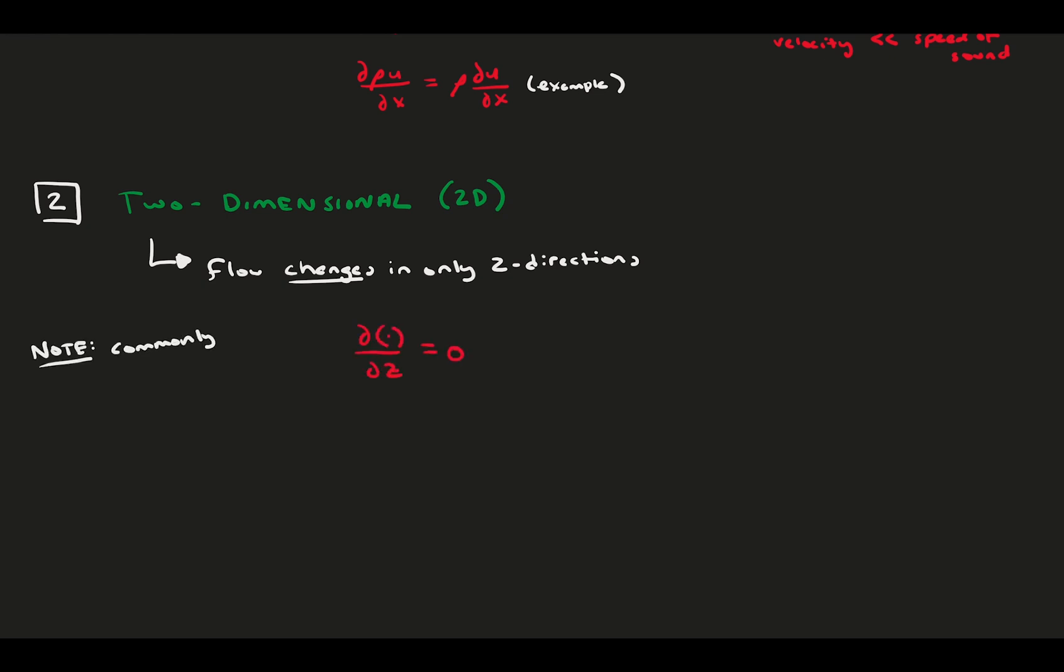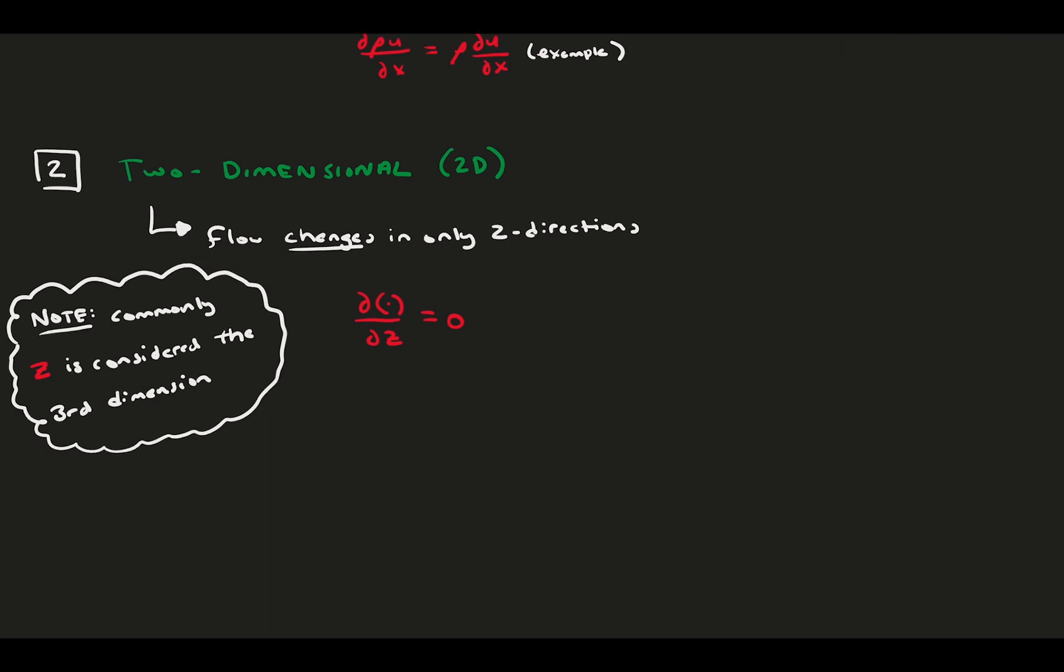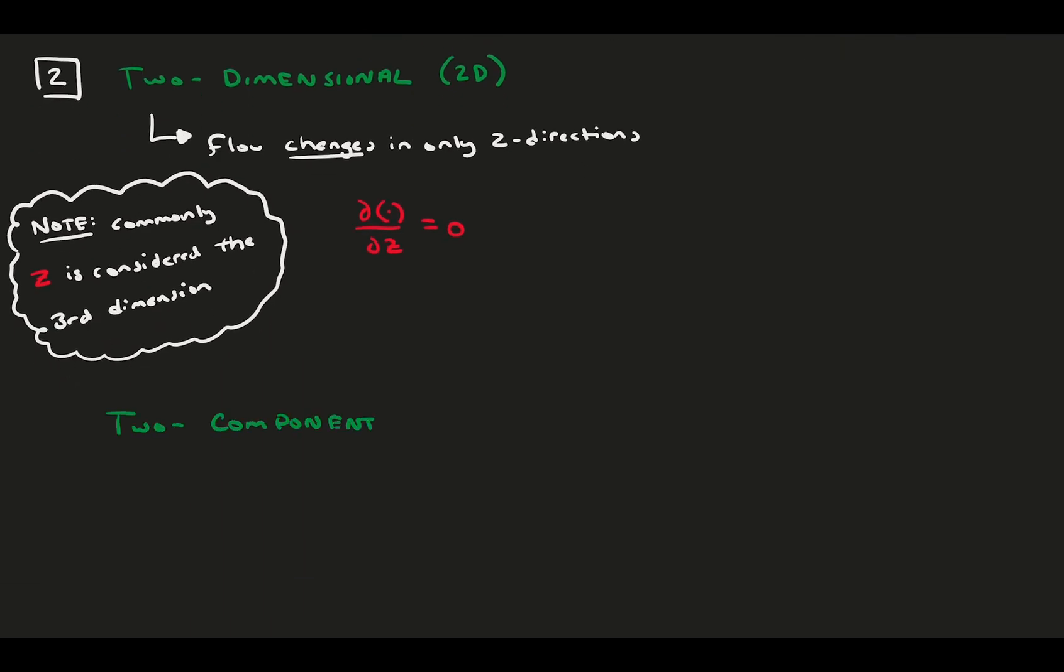It's very common that the third dimension is z, so usually it's safe to assume unless told otherwise. Paired with the 2D assumption is the two-component assumption, or 2C.